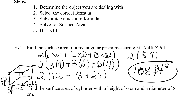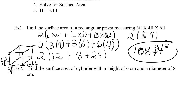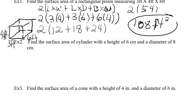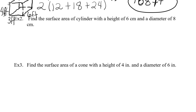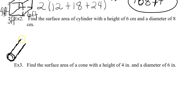Let's try another example. Example two: find the surface area of a cylinder with a height of six centimeters and a diameter of eight centimeters. First we need to determine our object — we have a cylinder, which is going to look like this.